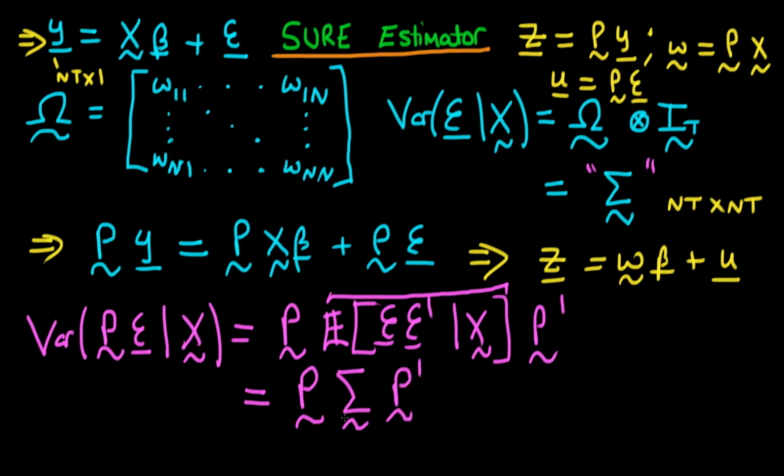And remember what we're trying to do in taking this transformation. Essentially, what we're trying to do is make our transformed error have a variance covariance structure which is diagonal. And I can say that this transformed variance should hence be equal to the identity matrix, where the identity matrix now has dimensions nt by nt.